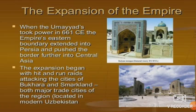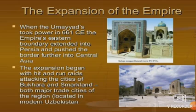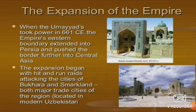When the Umayyads took power in 661 CE, the empire's eastern boundary extended into Persia and pushed the border further into Central Asia. The expansion began with hit-and-run raids attacking the cities of Bukhara and Samarkand, both major trade cities of the region, located in modern Uzbekistan.